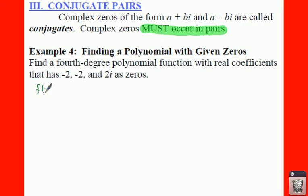So when you write your equation, you're going to have f(x) equals x. Now if your zero is minus 2, that needs to be written as plus 2. Then you have another negative 2, so we're going to say another x plus 2.